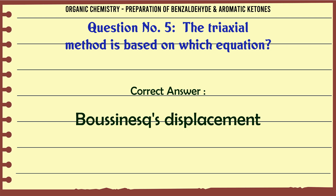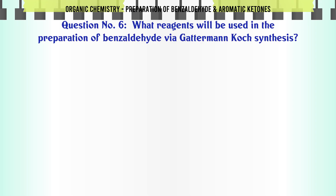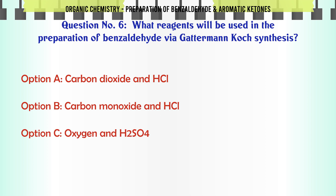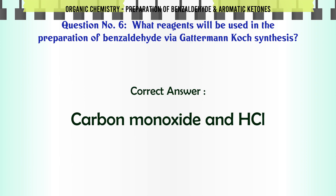What reagents will be used in the preparation of benzaldehyde via Gattermann-Koch synthesis? A. Carbon dioxide and HCl. B. Carbon monoxide and HCl. C. Oxygen and H2SO4. D. Carbon monoxide and H2SO4. The correct answer is carbon monoxide and HCl.